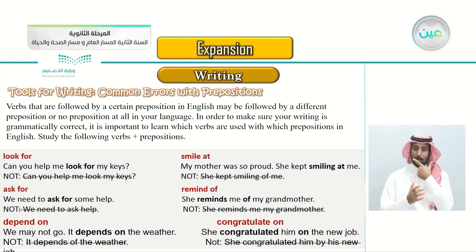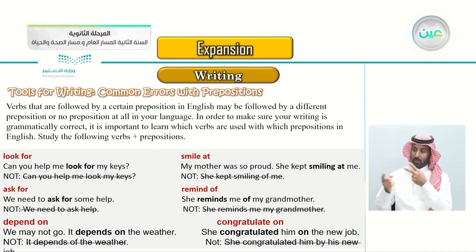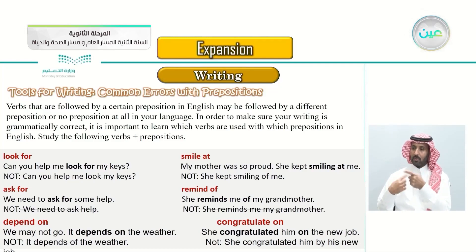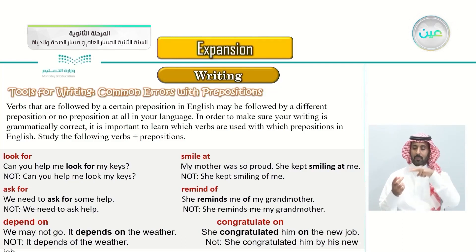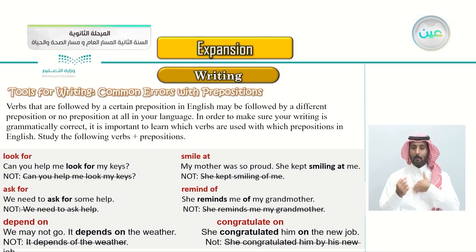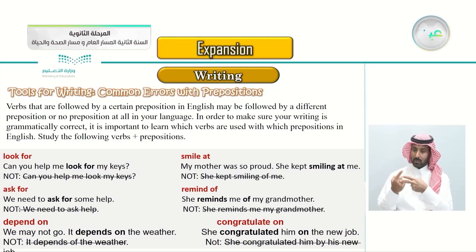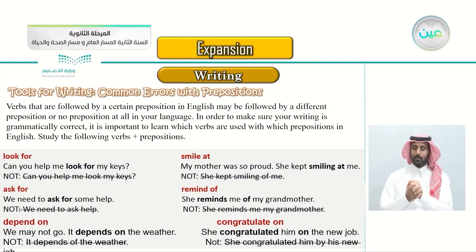Next: 'depend on' - we may not go, it depends on the weather. The verb 'depend' comes before the preposition 'on.' We say 'depend on,' not 'depend off.' Next: 'smile at' - my mother was so proud, she kept smiling at me. When someone is seeing you and keeps smiling, you say he is smiling at me, not 'smiling on me' or 'smiling of me.' The correct preposition with 'smiling' is 'at.'